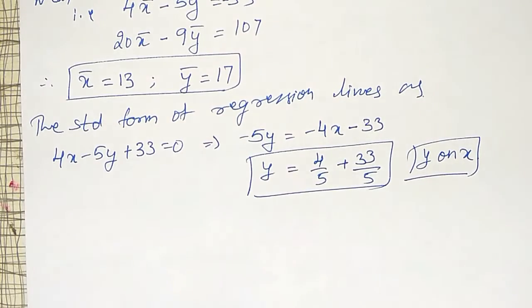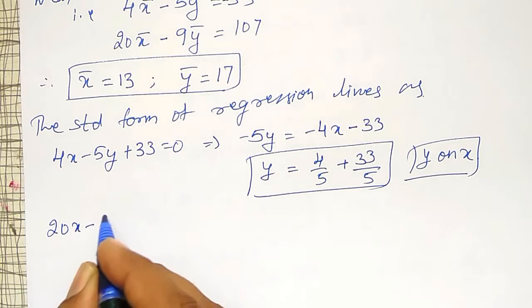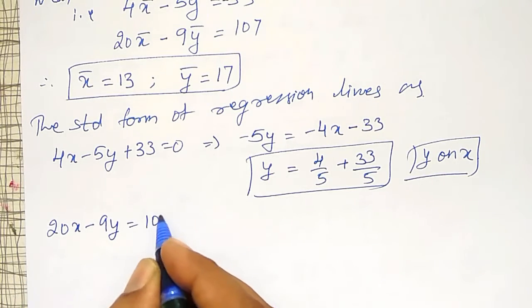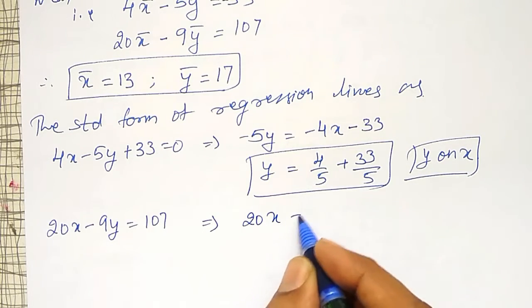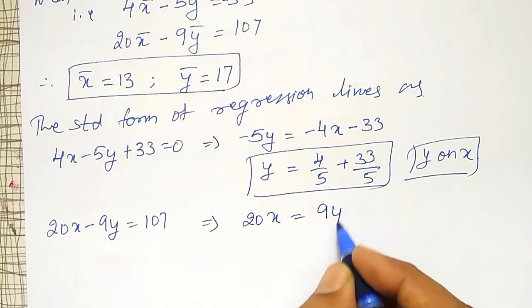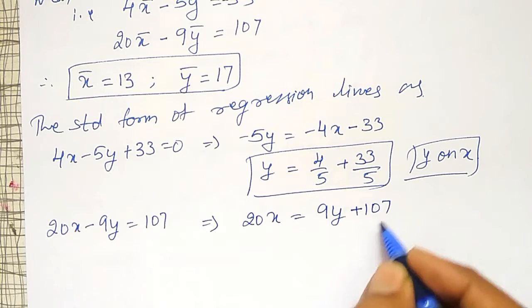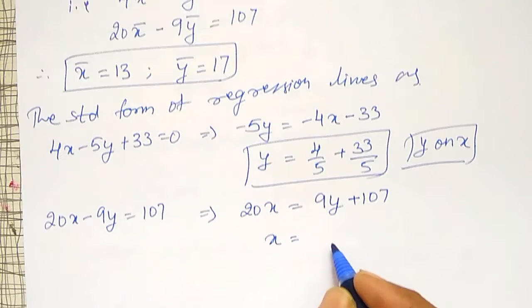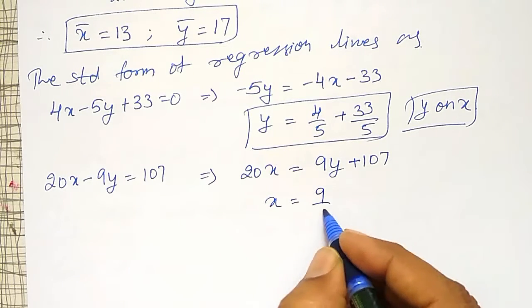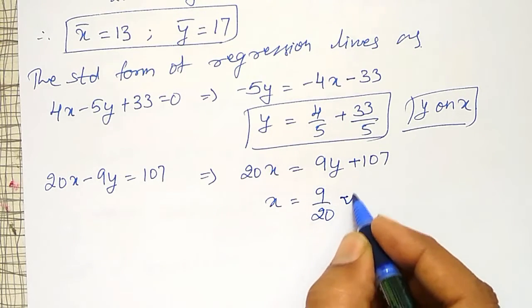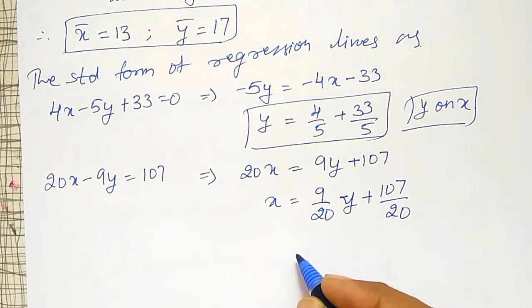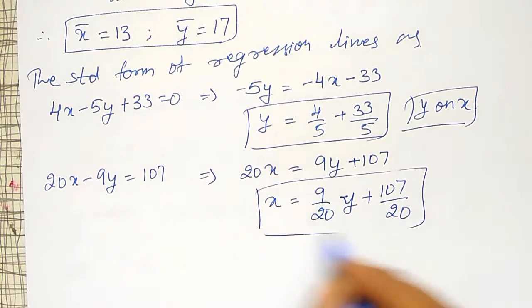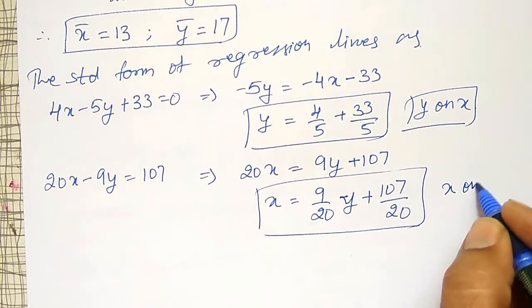Similarly, regression line x on y. Second equation is 20x - 9y = 107. Therefore x equal to, I have to solve from here. 20x = 9y + 107, divided by 20. This is the regression line x on y.